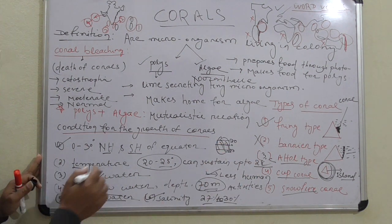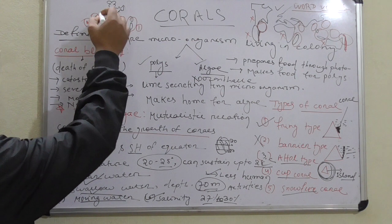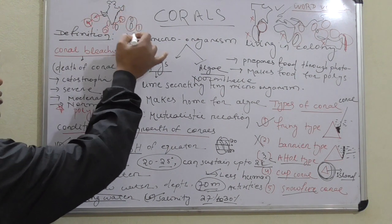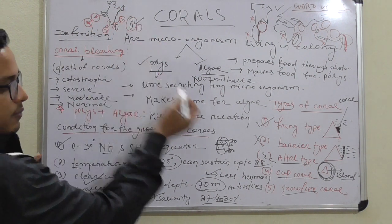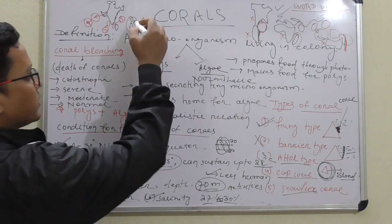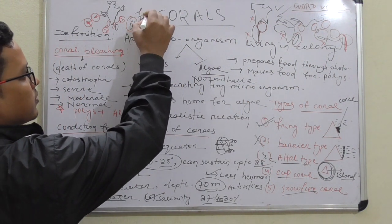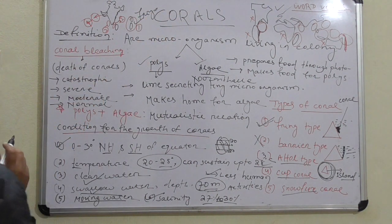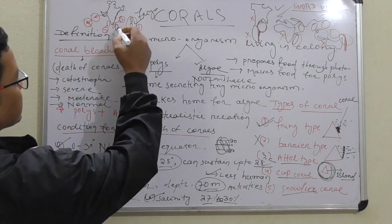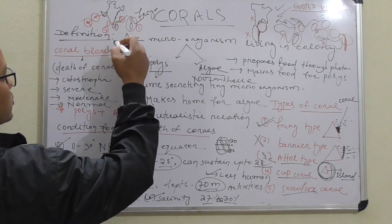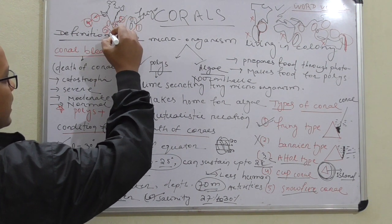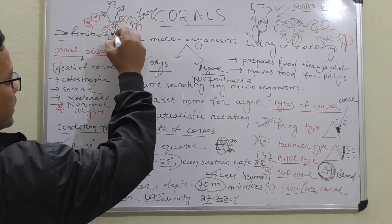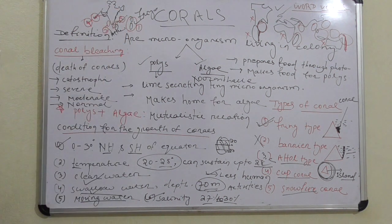Now the distribution of corals in India, as shown in the figure. Andaman & Nicobar — fringe type. Gulf of Mannar — also fringe type. Lakshadweep — atoll type. These are the distributions of corals in India.